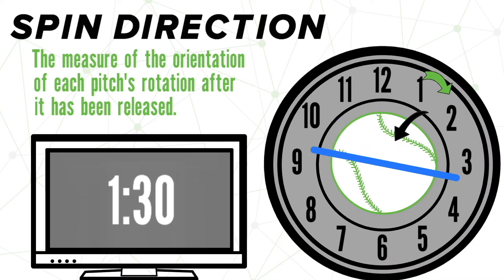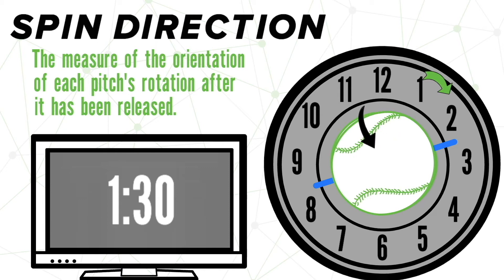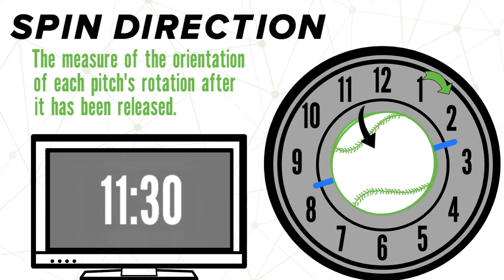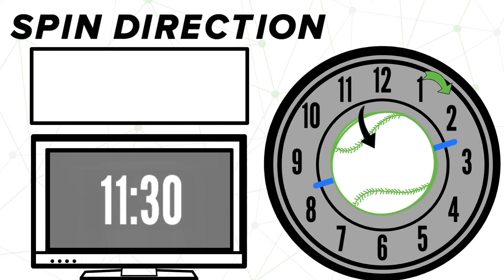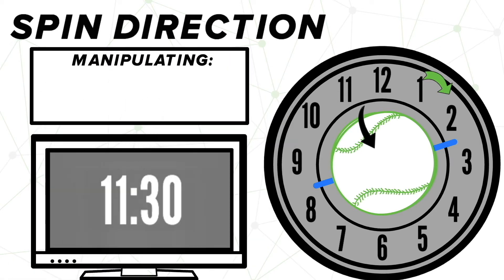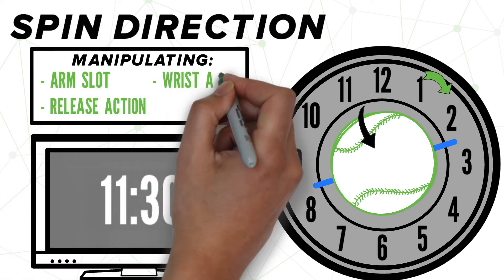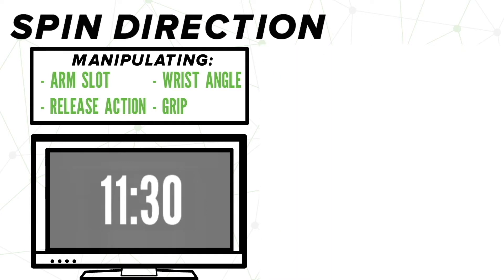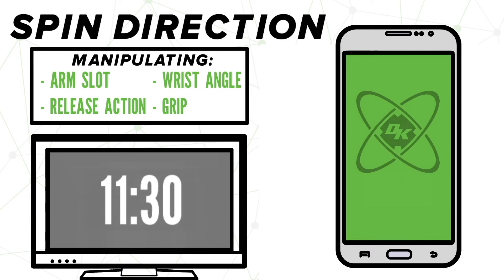But what if we wanted to change our 1:30 spin direction pitch to a pitch with an 11:30 spin direction? What factors play a role in altering a pitch's spin direction? To name a few, we can look to arm slot, a pitcher's release action, a pitcher's wrist angle, and of course, their grip. Altering any one of these variables will give you a different output on your spin direction reading.